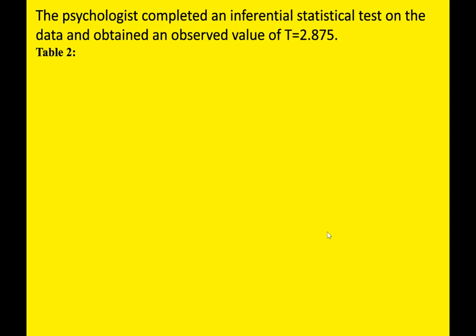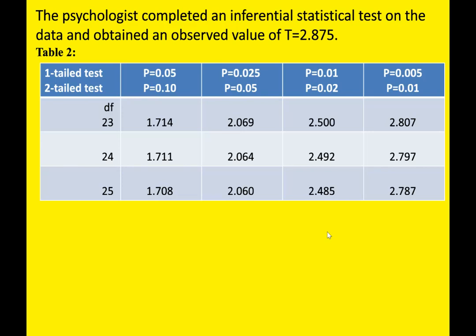In this case, the psychologist completed an inferential statistical test on the data and obtained an observed — meaning calculated — value of t equals 2.875. That might be anything; it might be U equals 6.248 or something similar. You will also be shown a table that looks something like this — this is a critical values table.